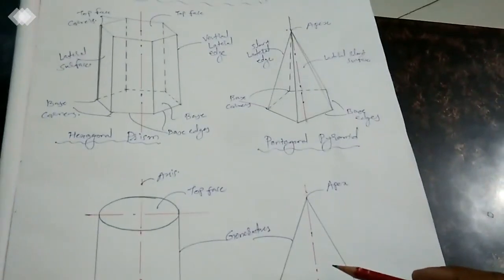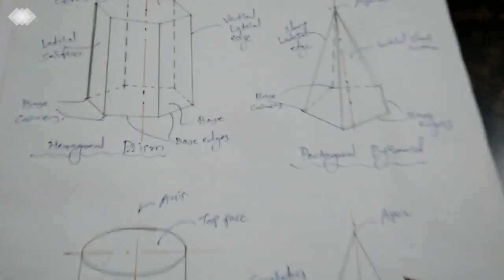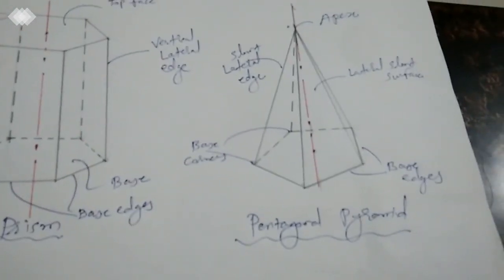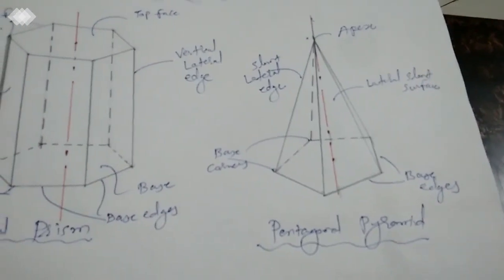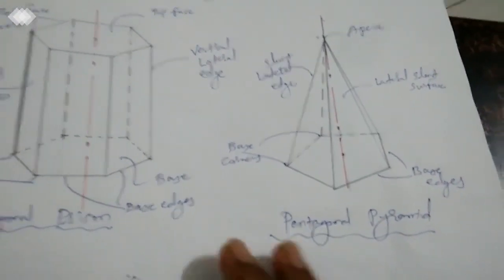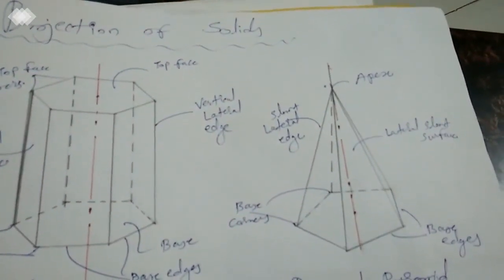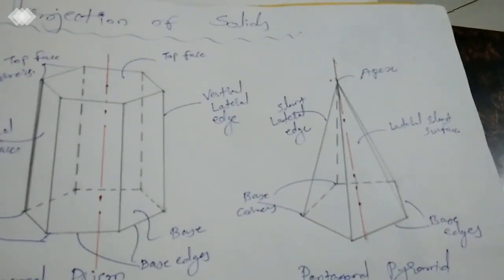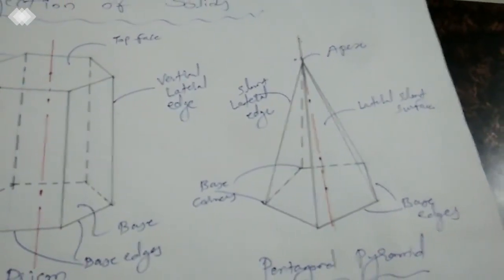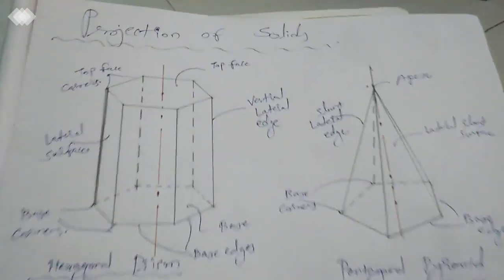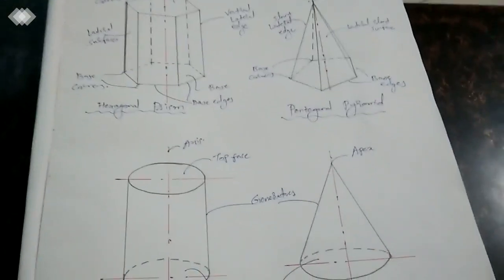Another solid is the tetrahedron, which we will see later. A tetrahedron is nothing but a type of pyramid — specifically an equilateral triangular pyramid. Tetrahedron means four; it carries four equilateral triangular surfaces — three as lateral faces and one as the base — and one apex. These are the five different kinds of solids we are going to learn in this topic: Projection of Solids.